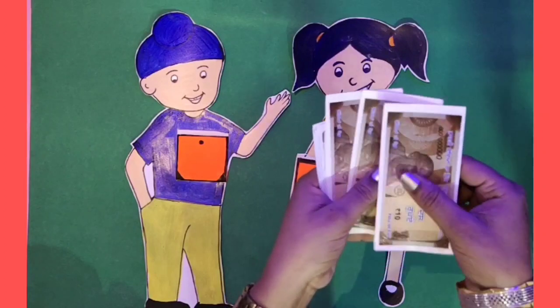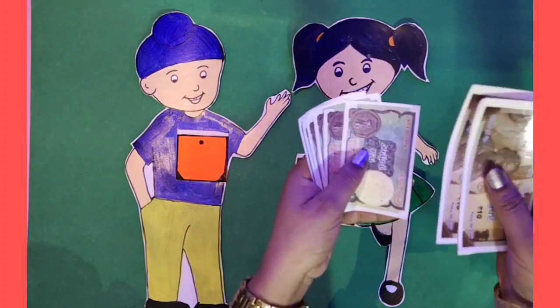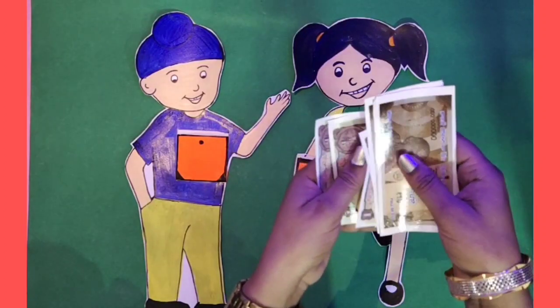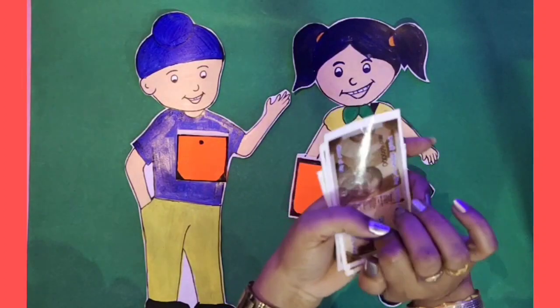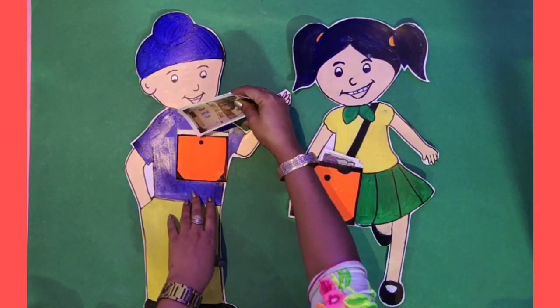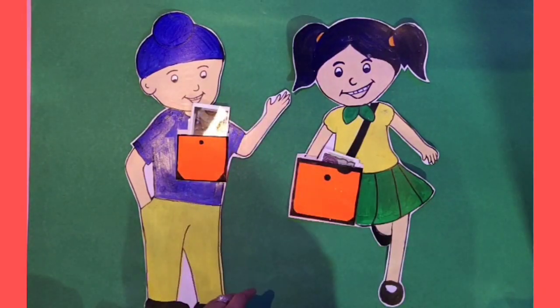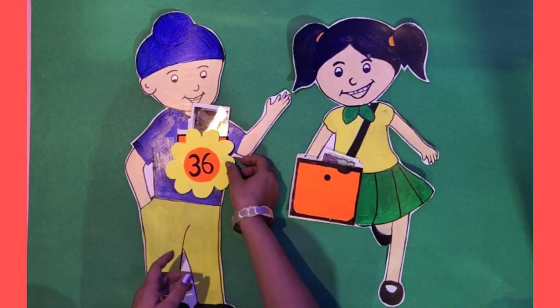10, 20, 30, 31, 32, 33, 34, 35, 36. So, there are 36 rupees in Sukhman's pocket.